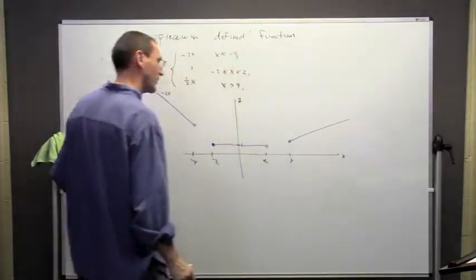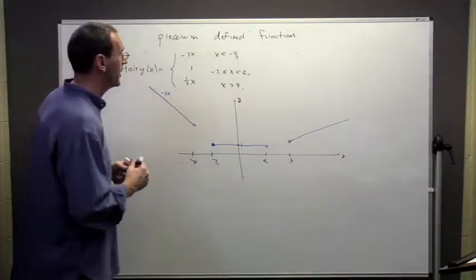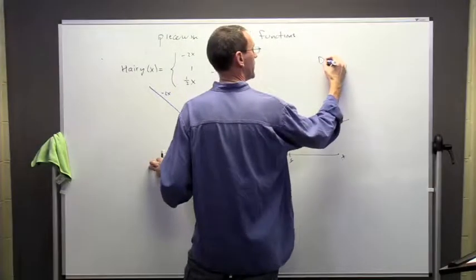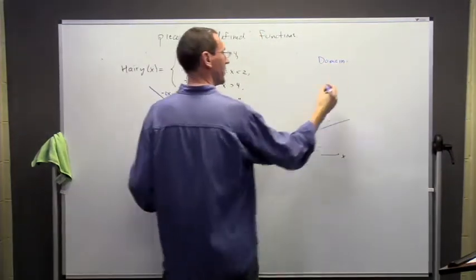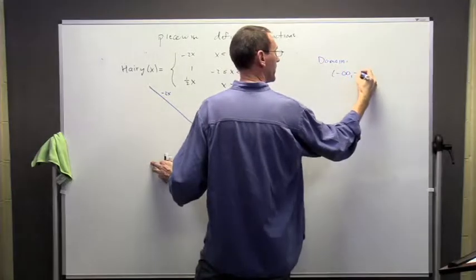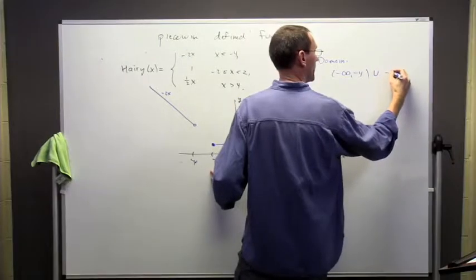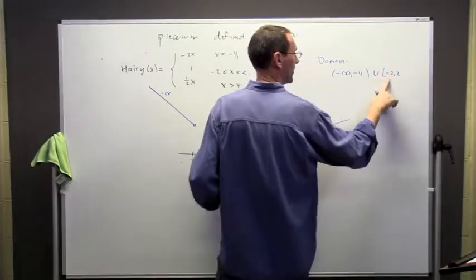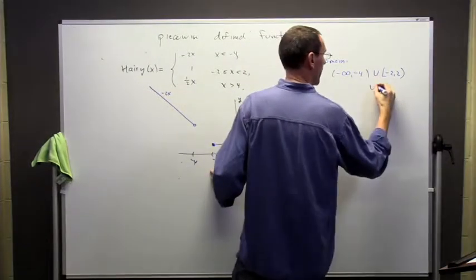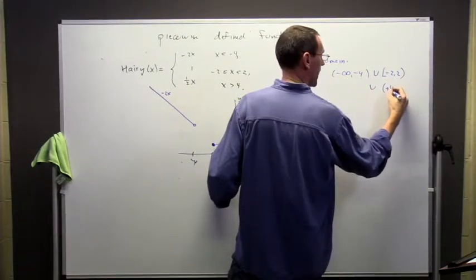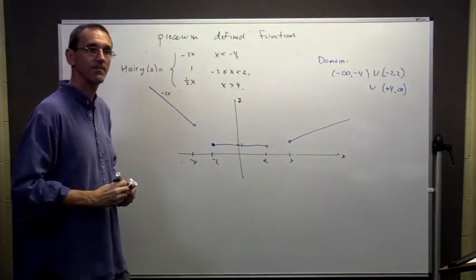If I get the domain of this function, the domain is going to be from minus infinity to minus 4 — not including minus 4. Then it includes minus 2 to 2, including minus 2 but not 2. And then it goes from positive 4 off to infinity.